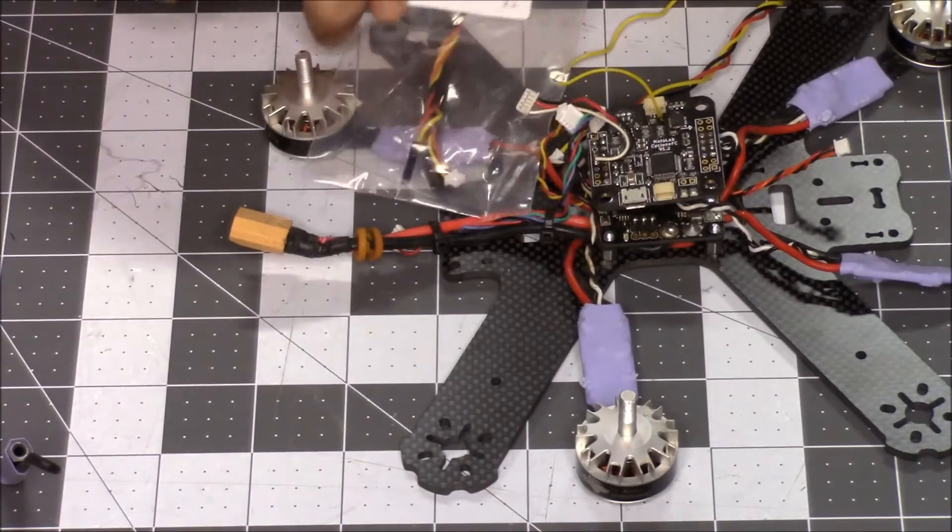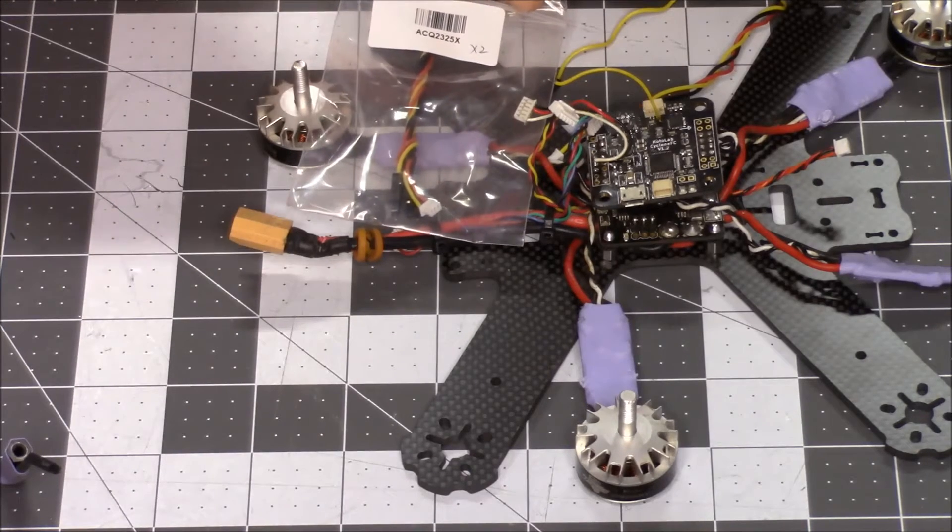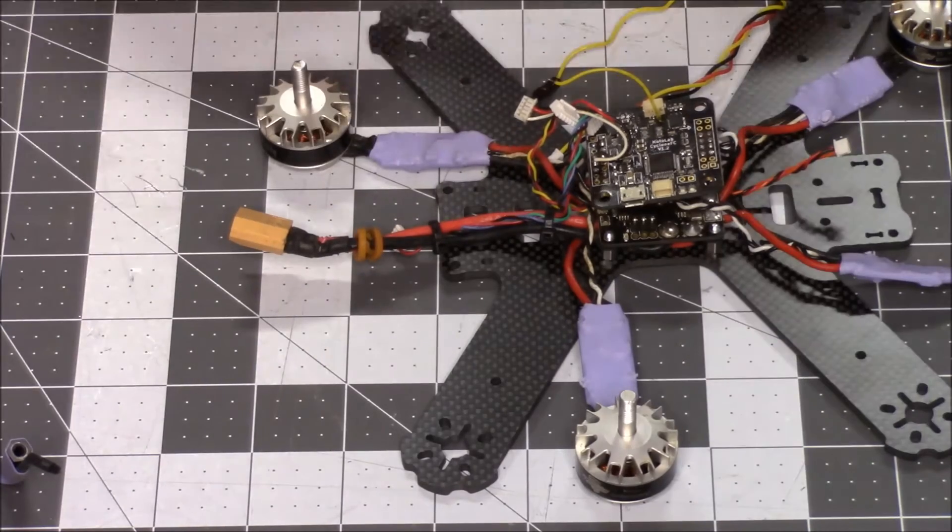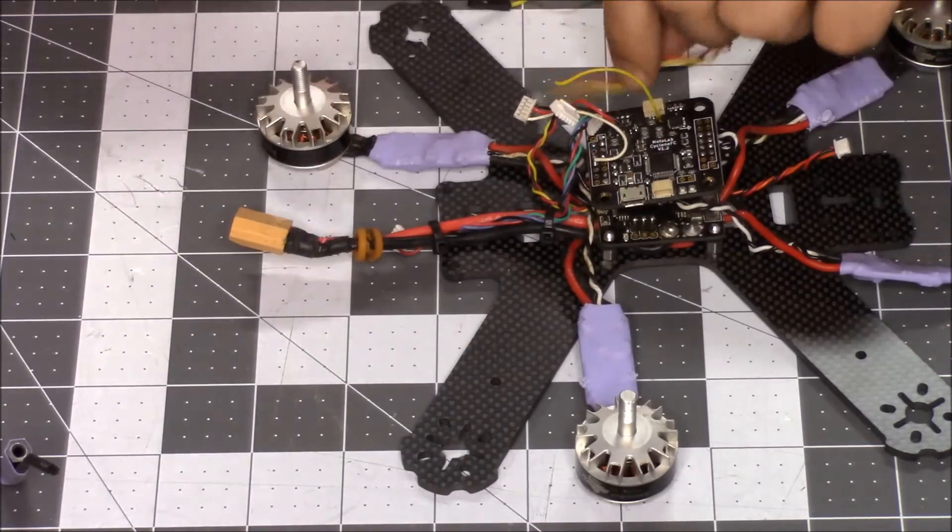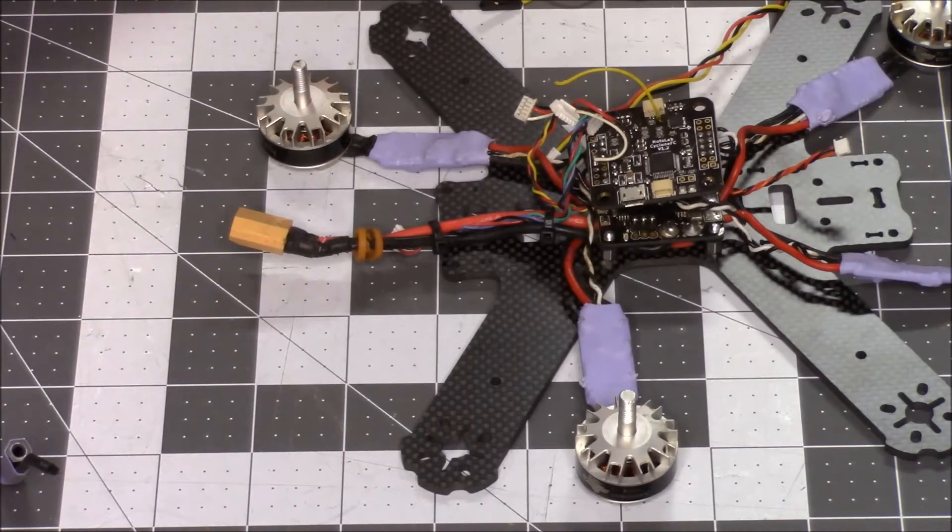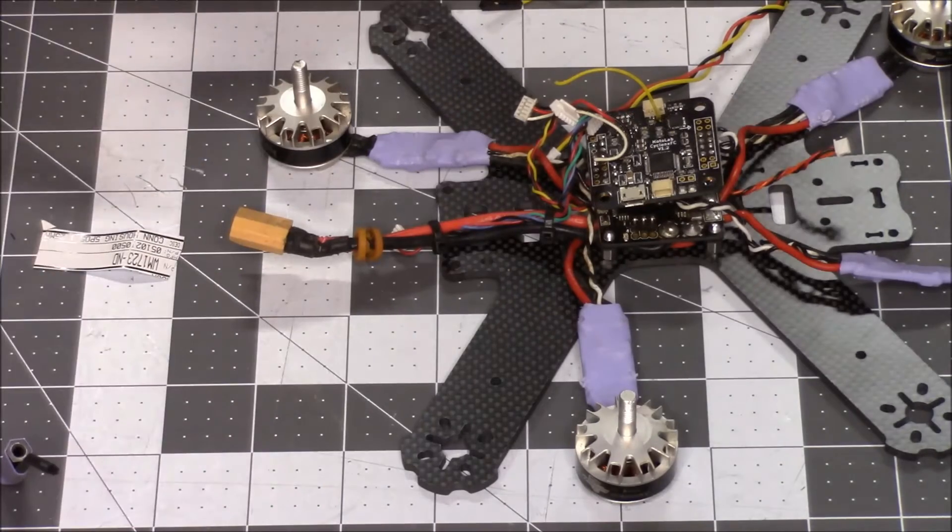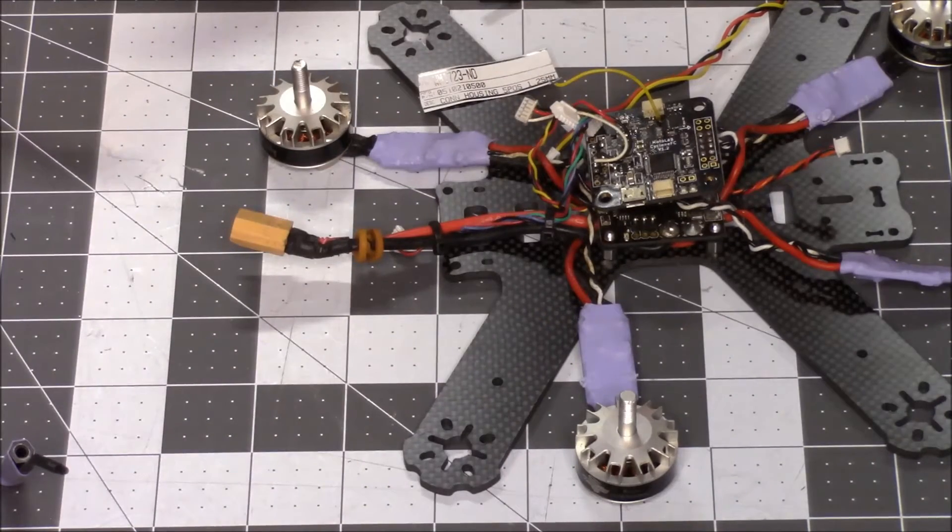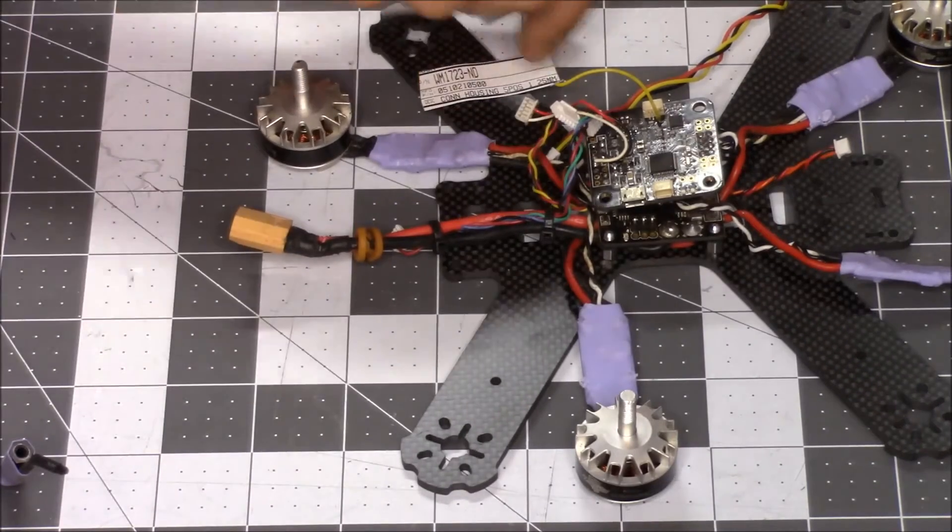Here is the part number. I'll put a link for this in the description, but it's a ACQ 2325X. I'll put a link in the description for you. And so this connector style is, I can actually tell you what it is because I have spare ones over here. I'll put a link for that in the description as well, but you can actually buy the connector and it is a WM1723ND from DigiKey.